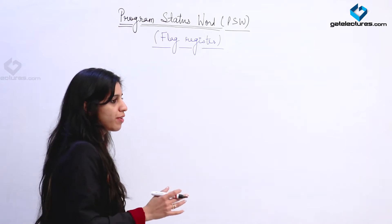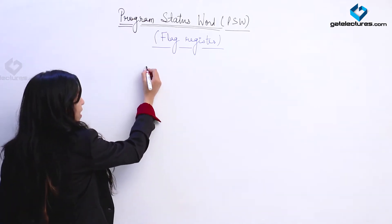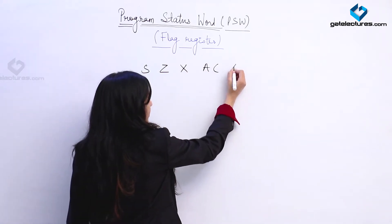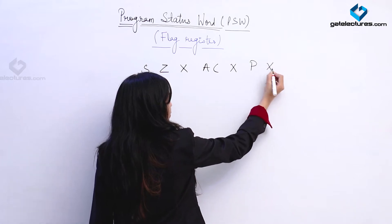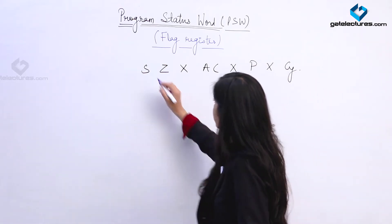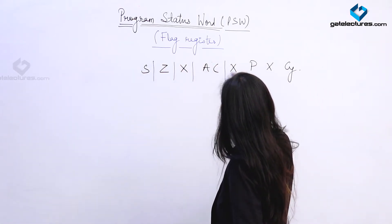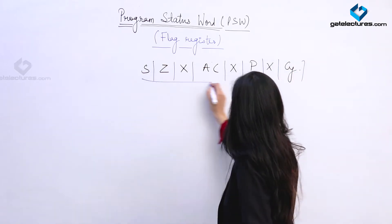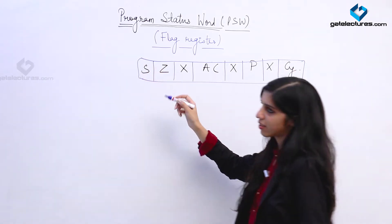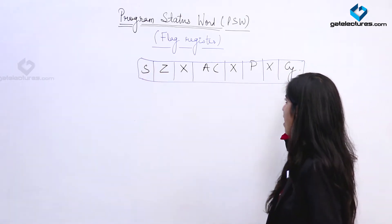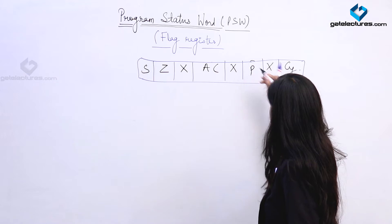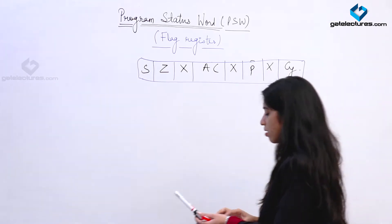First, we are going to look at what flags are present in the 8085. We are having five flags placed like this: S, Z, then don't care, Auxiliary Carry, don't care, Parity, don't care, and Carry. We are having five flags, and since the accumulator is an 8-bit register, this is how the five flags are placed: S Z X AC X P X CY.